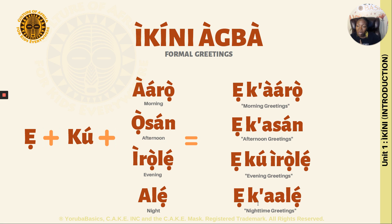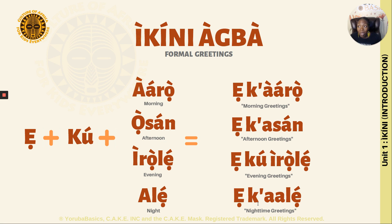Now, some people might say it's like 'good morning, good afternoon, good evening, good night.' But in English, 'good night' means you're about to go to sleep, you're leaving — bye. In Yoruba, if you see someone at night and say EKALE, you're not saying 'I'll talk to you later.' You're saying I'm acknowledging you during this nighttime. So don't make the mistake — EKALE is not the same as 'good night.'